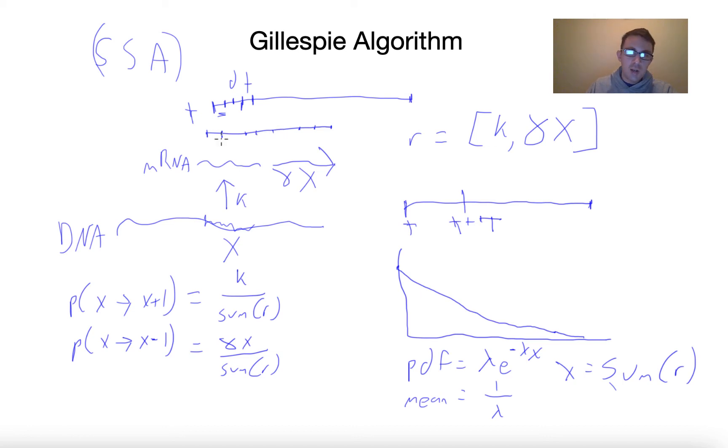At each time point that we're randomly choosing, we just choose which event will happen and then update the value of X accordingly. It'll either be X going to X plus one or X going to X minus one. When we actually run this, we should get a trajectory of X that's sort of like a stochastic trajectory where it gets produced and then eventually reaches its steady state. Remember, the steady state for this will be k over gamma.